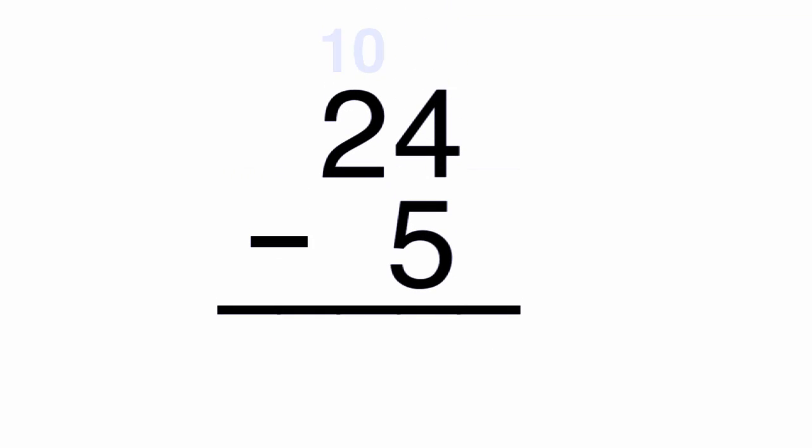2 is in the tens place, which means that we have two tens. Borrow one of them, and add it to the 4 in the ones place to get 14. Cross out the 2 and replace it with a 1, since we only have one ten left after borrowing.